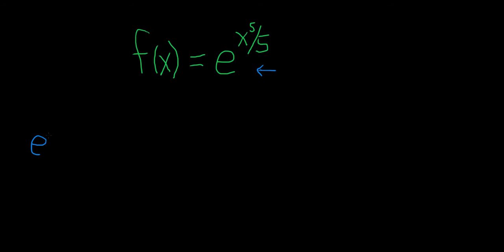So e to the x is equal to the infinite sum, as n runs from 0 to infinity, of x to the n over n factorial.